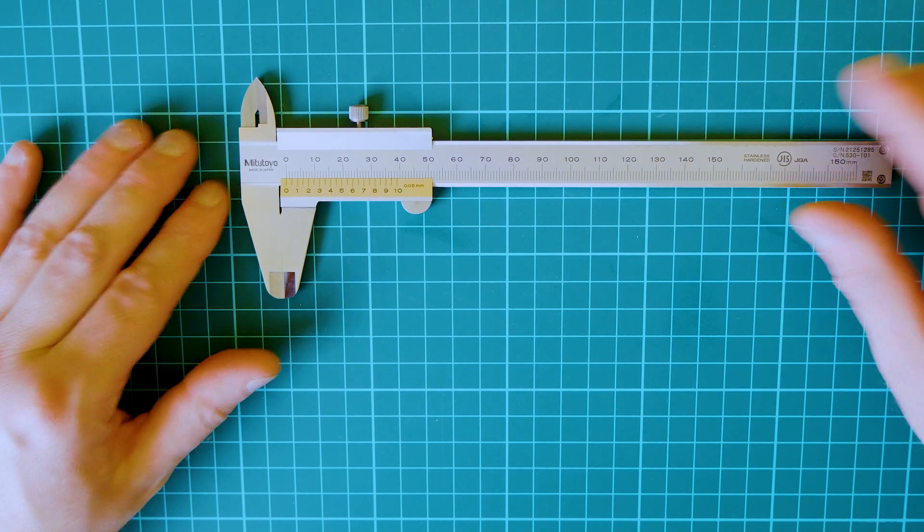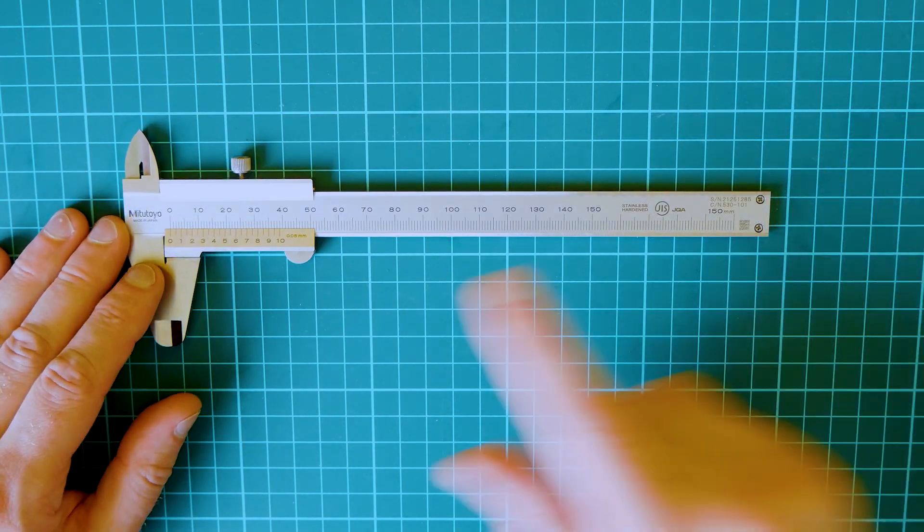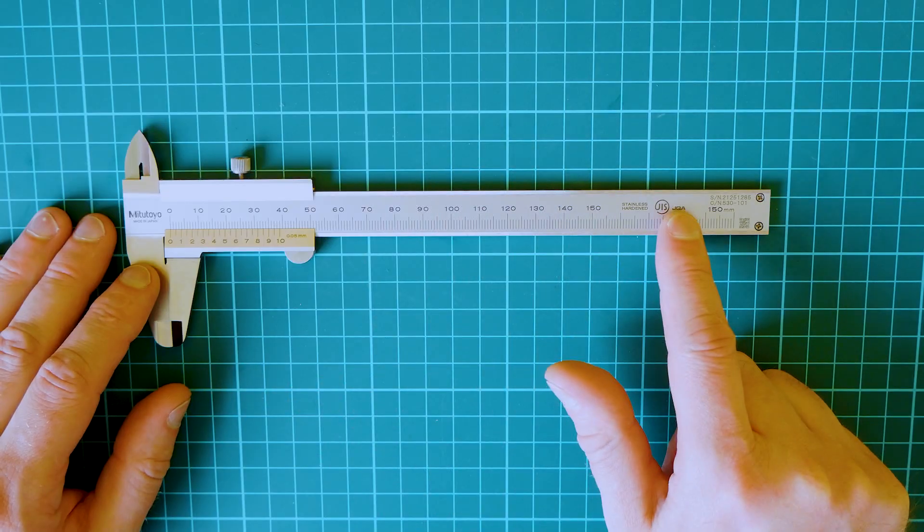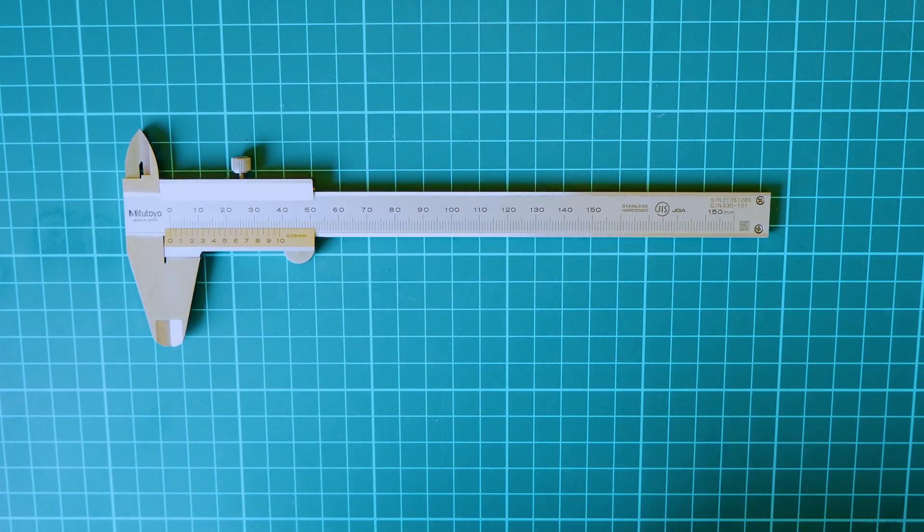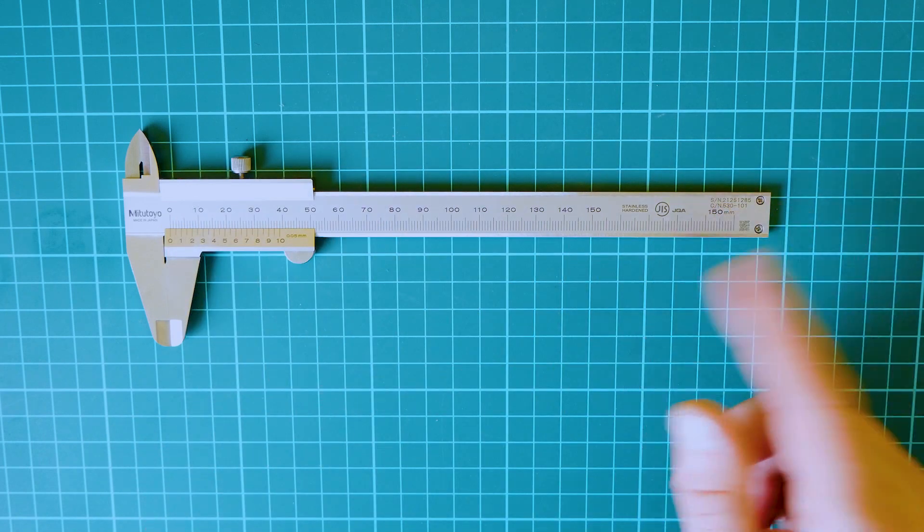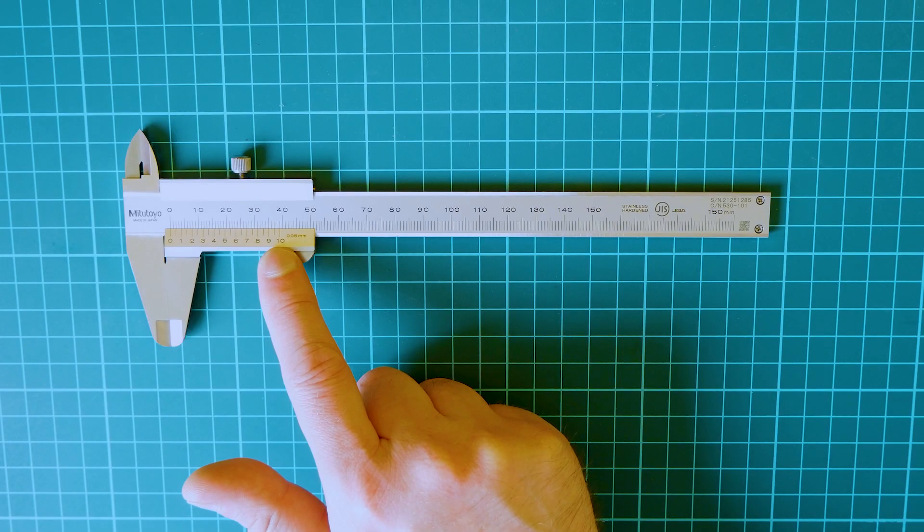So how to actually use Vernier calipers. It has two rulers: this one ruler, which in my case measures in centimeters and millimeters (it can be inches), and this one is the Vernier ruler.